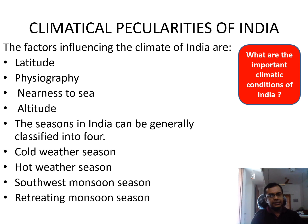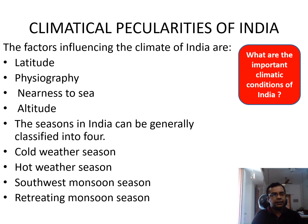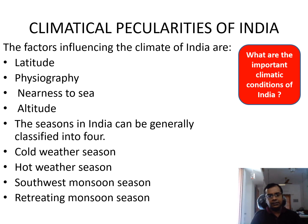The seasons in India can be generally classified into four: the first one is the cold weather season, followed by the southwest monsoon season, then the retreating monsoon season.